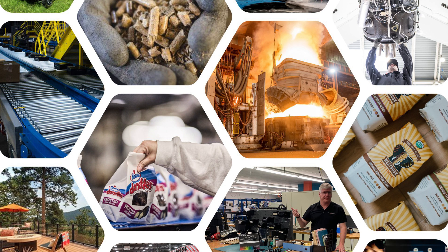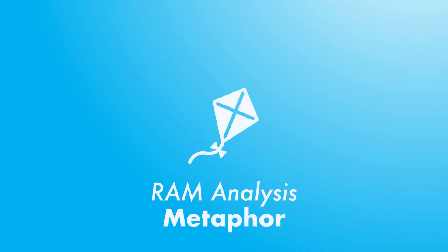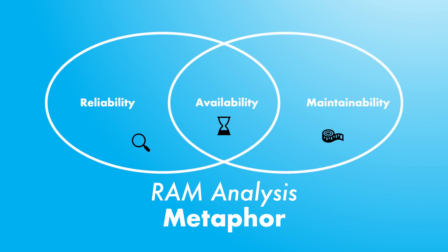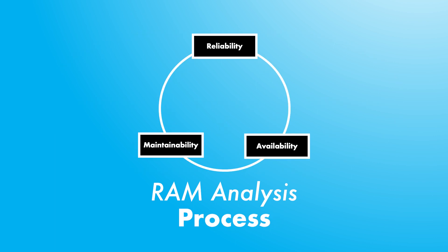Maybe it's best to understand RAM analysis with a metaphor. Imagine that RAM analysis is a set of tools to help you evaluate systems and their components. We have three sets of tools at our disposal: reliability, availability, and maintainability. RAM analysis is a process that combines the study of these three dimensions. Importantly, these dimensions must be examined together in order to derive valuable and practical insights.